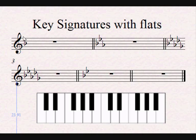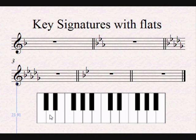In this particular case, we don't have a second last flat because there is only one flat. In that case, we just need to remember that if we see only one flat, we are working on the key of F major — F major or the relative minor of F major — 1, 2, 3, 4 — D minor.